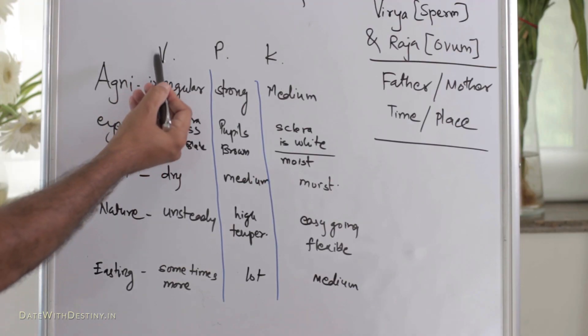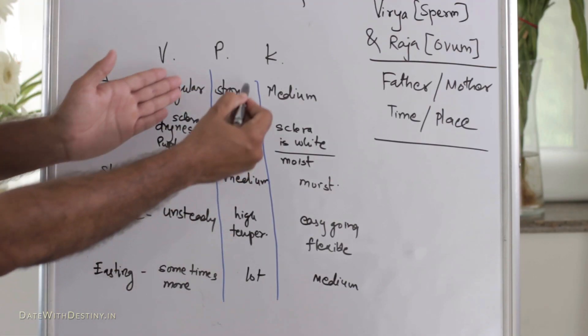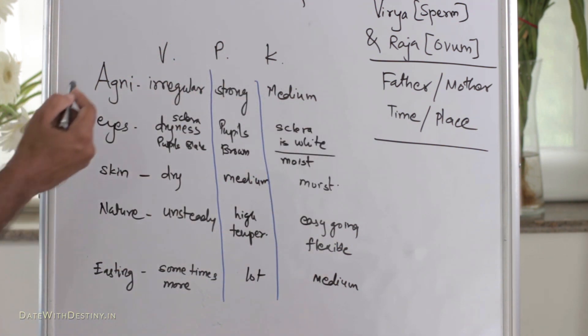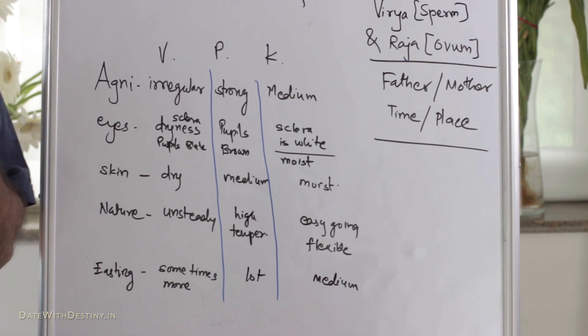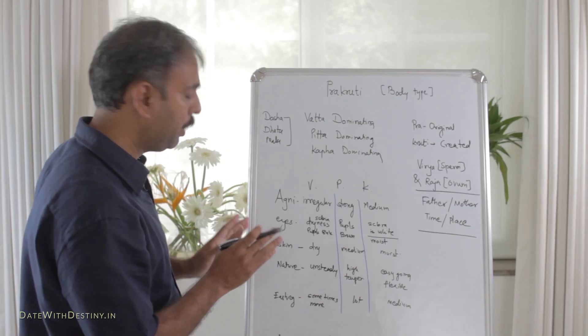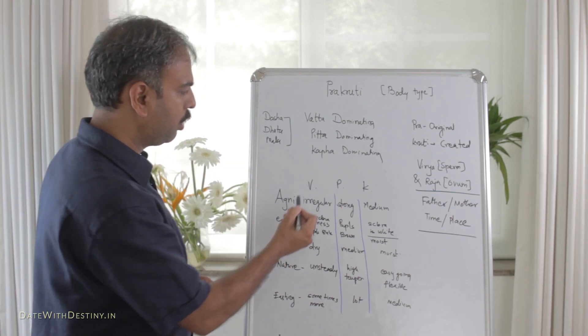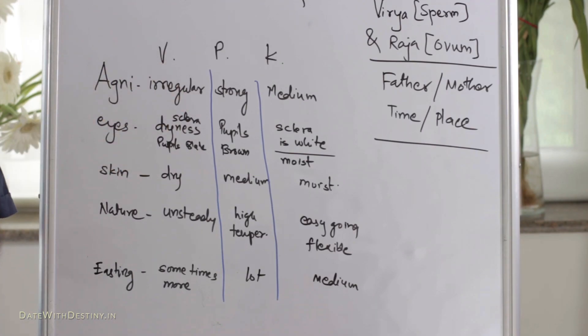See, this is Vata column, this is Pitta column, and this is Kapha column. Now, if we ask the question to a person or to yourself, Agni is nothing but, in narrow meaning, hunger. So with Vata Prakruti, the person will say that he has irregularly irregular hunger. With Pitta Prakruti, he has very strong hunger. And with Kapha Prakruti, it is very medium.